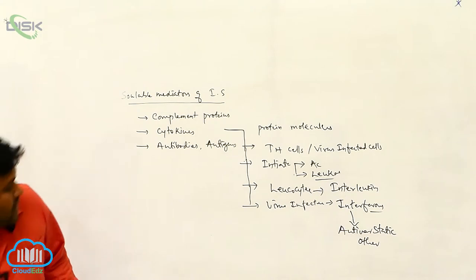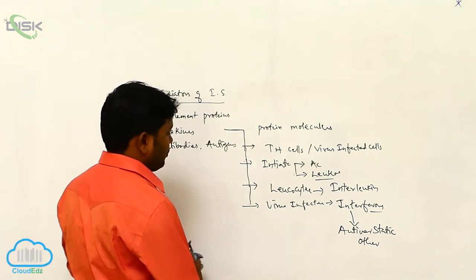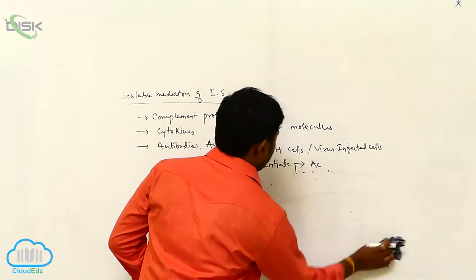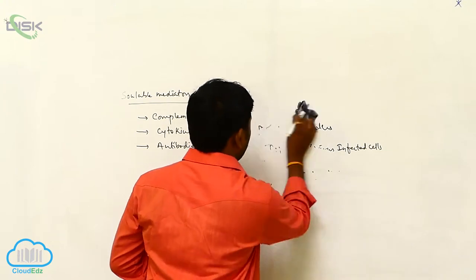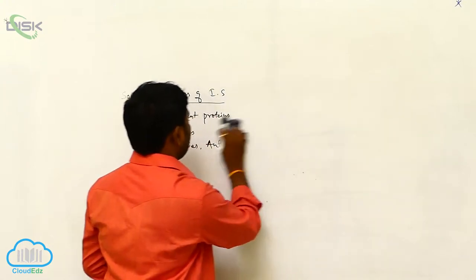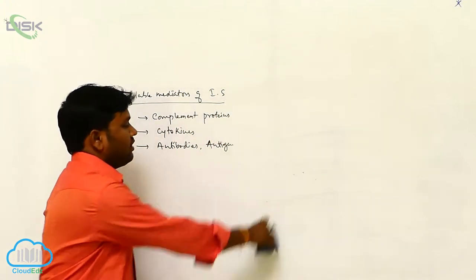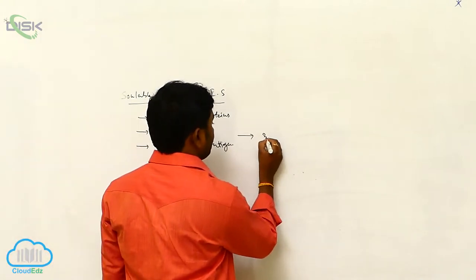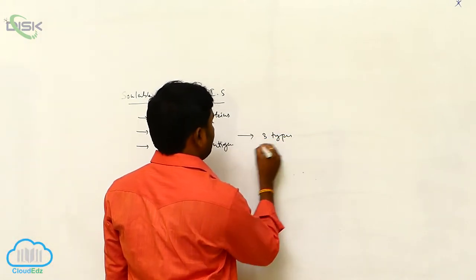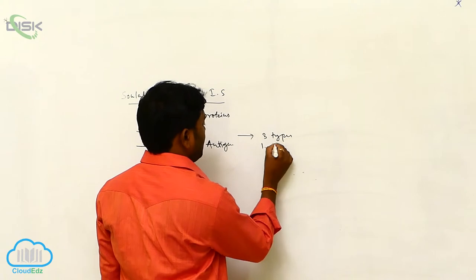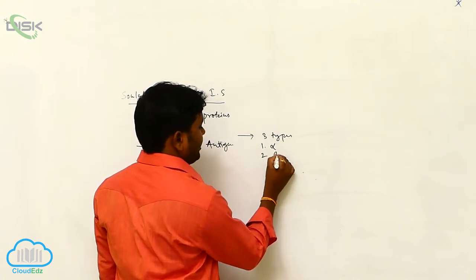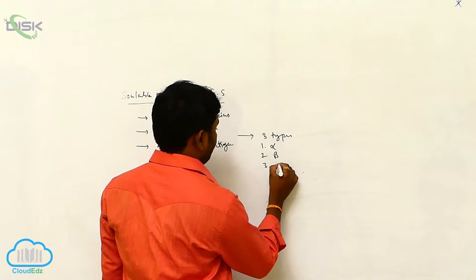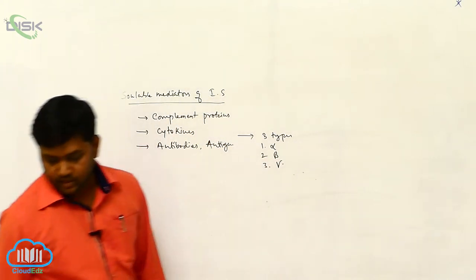The interferons are three types: alpha, beta, and gamma.